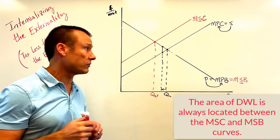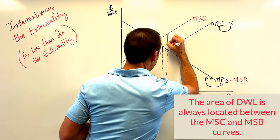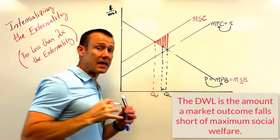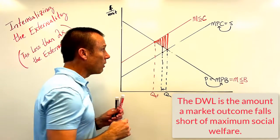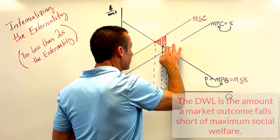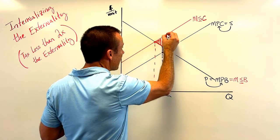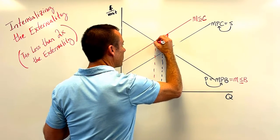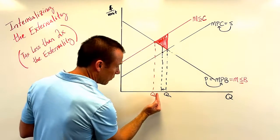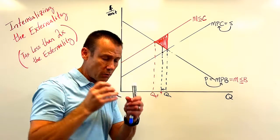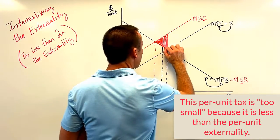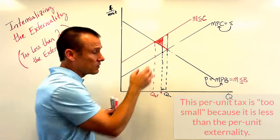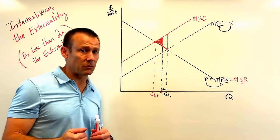For deadweight loss, focus on the S-curves — the societal curves. If we produced all the way to Q-market, this entire triangle would have been the deadweight loss if we did nothing. But with that tax that's too small, we're going to get rid of quite a bit of the deadweight loss. Because of that tax we only produce to a lower quantity. It's not optimal — it's not equal to the per unit externality — but we get rid of quite a bit of that deadweight loss. In fact it probably got rid of more than half the deadweight loss, which is an important takeaway.